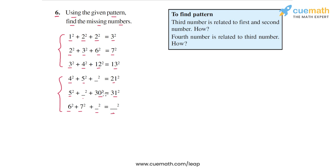We are given a hint: to find the pattern, the third number is related to the first and second numbers — but how? And the fourth number is related to the third number — again, how? So let's look at all of the numbers and try to find out the pattern between them.